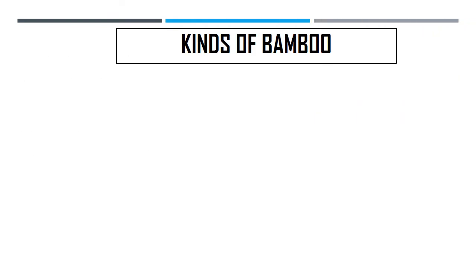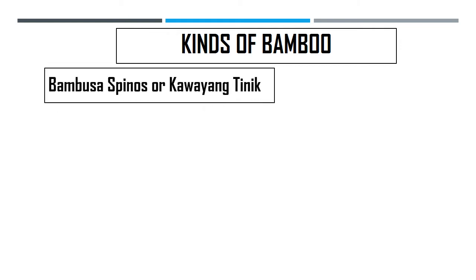Now let's proceed to the kinds of bamboo. There are 32 recorded species of bamboos in the Philippines. Among the identified erect bamboo species, the first one is Bambusa spinosa, also known as kawayang tinik.